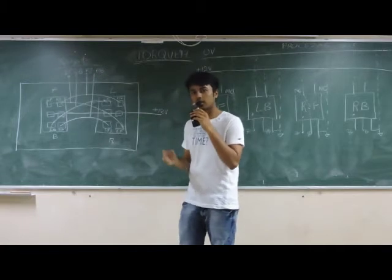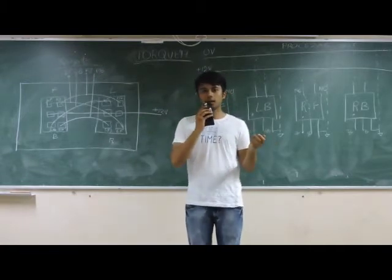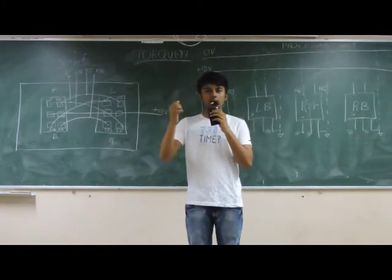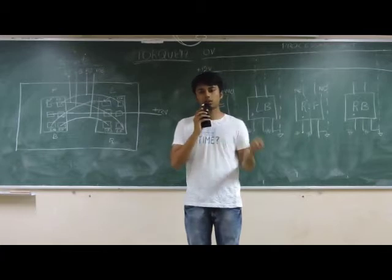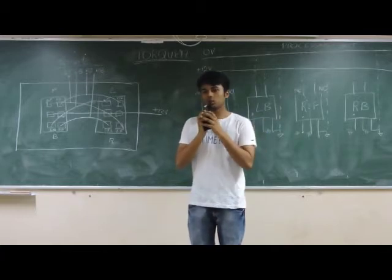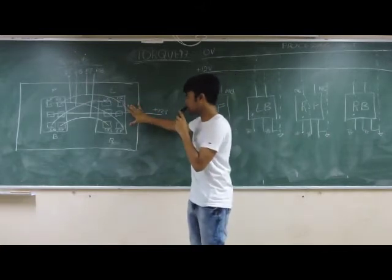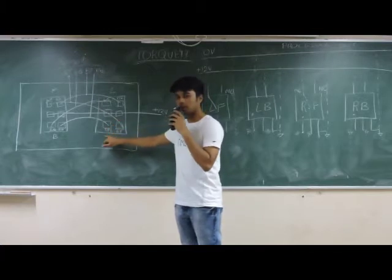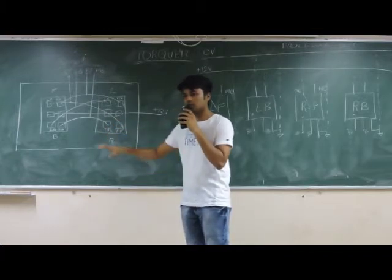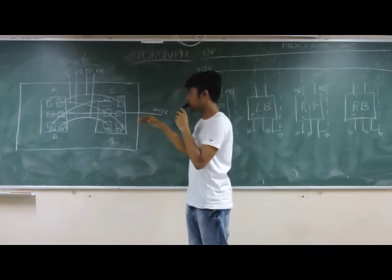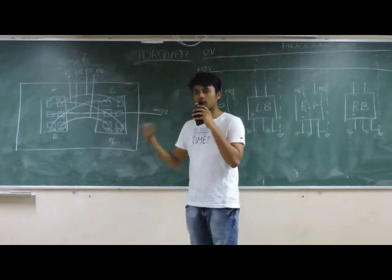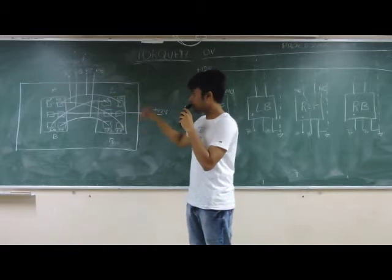Now let's talk about the right motion. Similar to left, in the right motion the right part of the bot moves in the backward direction and the left part moves in the forward direction. So the left part will be in the forward direction and the right part will be in the backward direction. This is the basic schematic for how each switch gives commands for each individual motion — forward, backward, left, and right.